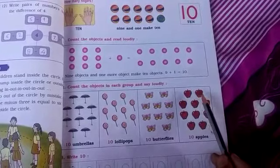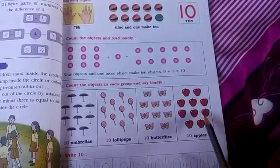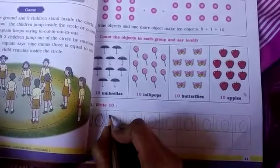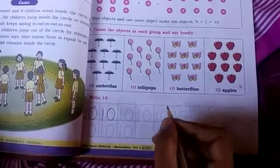1, 2, 3, 4, 5, 6, 7, 8, 9, 10. There are 10 apples. Write 10. 1, 0, 10. Write. Just drag and write.